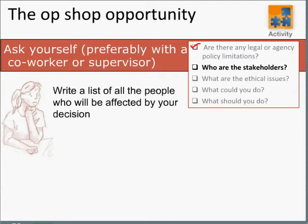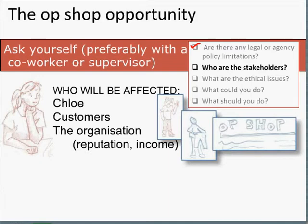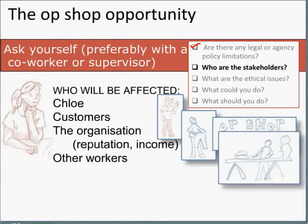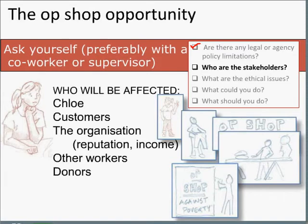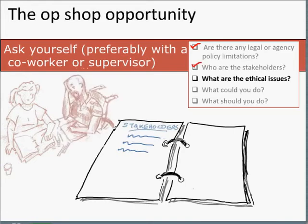Next, write down a list of all the people who are going to be affected by your decision. In Chloe's case, she thought about who's going to be affected — first of all, herself, but also the customers who'd be missing out. When she thought about it more, she realised that the organisation's reputation and perhaps income were going to be affected. The other workers would be affected — they'd be watching her for leadership. And the people who donated the clothes had a stake in it because they had an expectation as to what their clothes donation was going to be used for. Once she wrote the list down, Chloe realised it was a much longer list than she had originally thought. They'll also talk about our need for integrity and having a lack of corruption — not benefiting yourself at the expense of clients, for example.